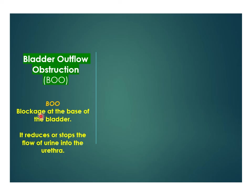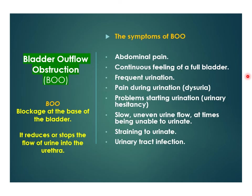Bladder outlet obstruction (BOO) is due to a blockage at the base of the bladder by an enlarging prostate or some other cause. It reduces or stops the flow of urine into the urethra from the bladder. Symptoms of BOO include abdominal pain, continuous feeling of a full bladder, frequent urination, pain during micturition (dysuria), problems starting urination (urinary hesitancy), slow or uneven urine flow, inability to urinate, straining to urinate, and effects of urinary tract infection.